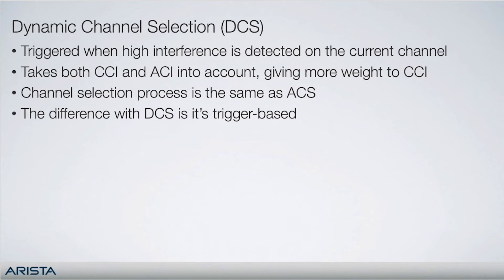Dynamic channel selection, or DCS, occurs when a high level of interference is detected on the current channel. This mechanism takes into account both co-channel and adjacent channel interference, giving CCI more weight. When a change of channel needs to be made, it goes through the same channel selection process as ACS. The difference is that this is trigger-based versus occurring at boot time or regular intervals.